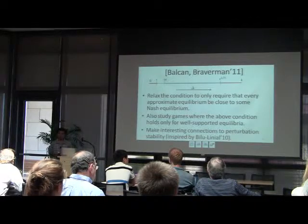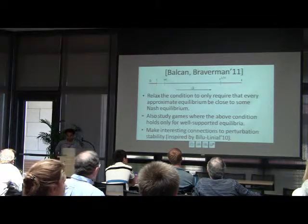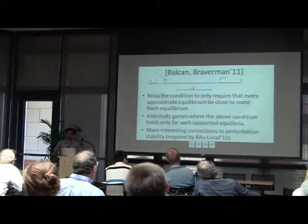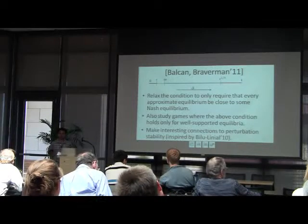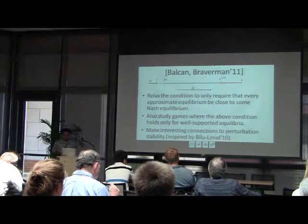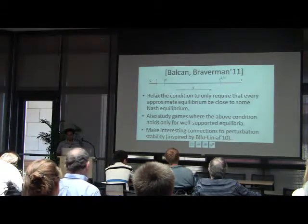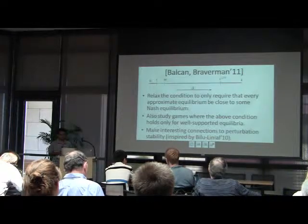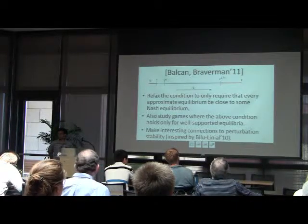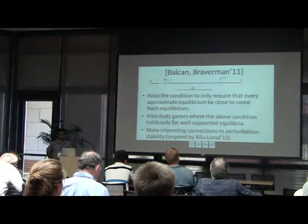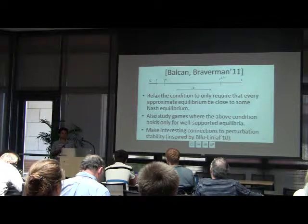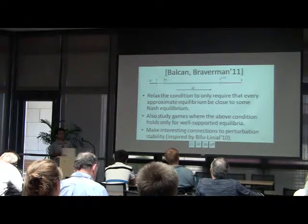I also want to mention the work of Balkan and Braverman, which extends this framework in interesting directions. First, they work with a much weaker condition where every approximate Nash equilibrium must be close to some true Nash equilibrium — so they consider games where there could be many Nash equilibria far from each other, but together they cover all approximate Nash equilibria. They also study well-supported approximate Nash equilibria, and they make interesting connections to perturbation stability — inspired by the work of Bilu and Linial — which says that if you perturb the payoffs slightly, the Nash equilibrium does not change by too much. They show these two notions of stability are related.